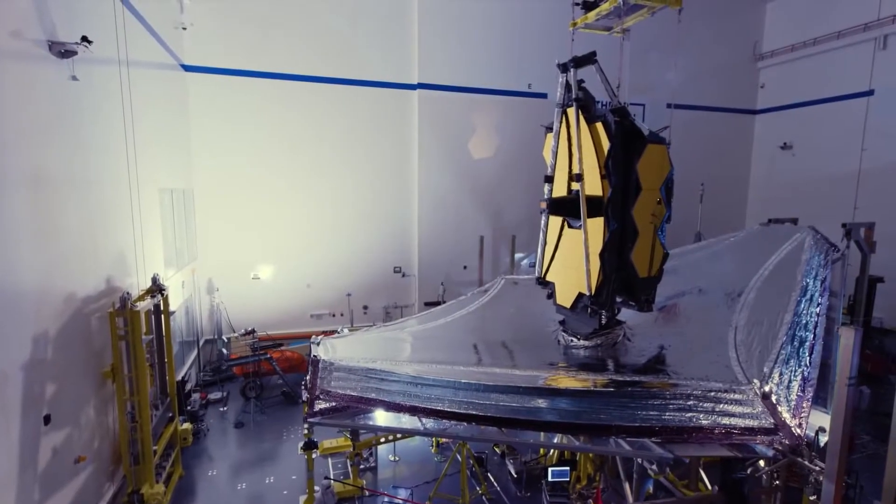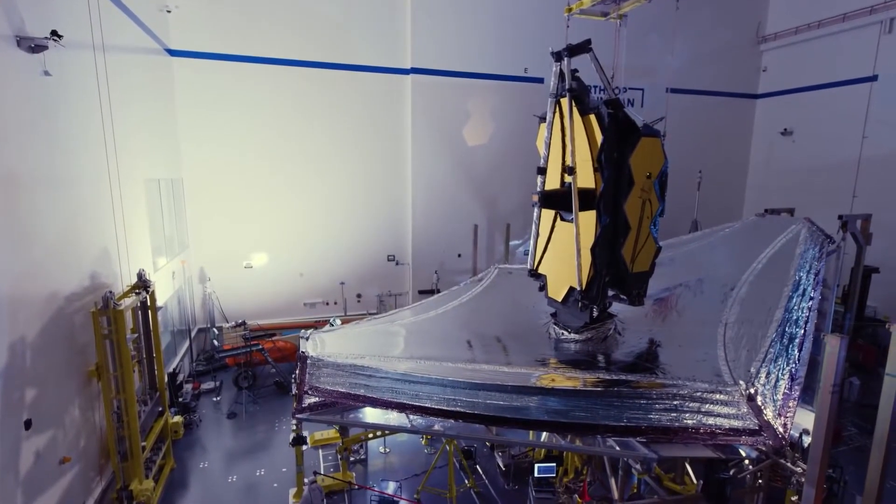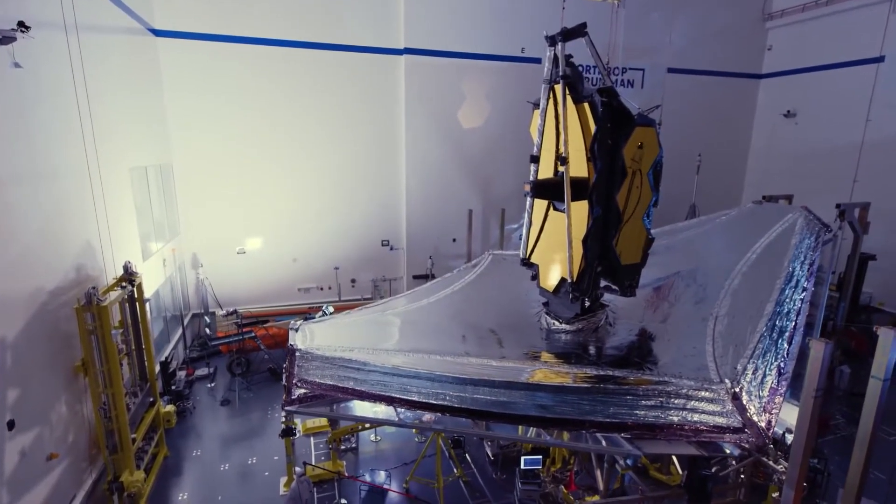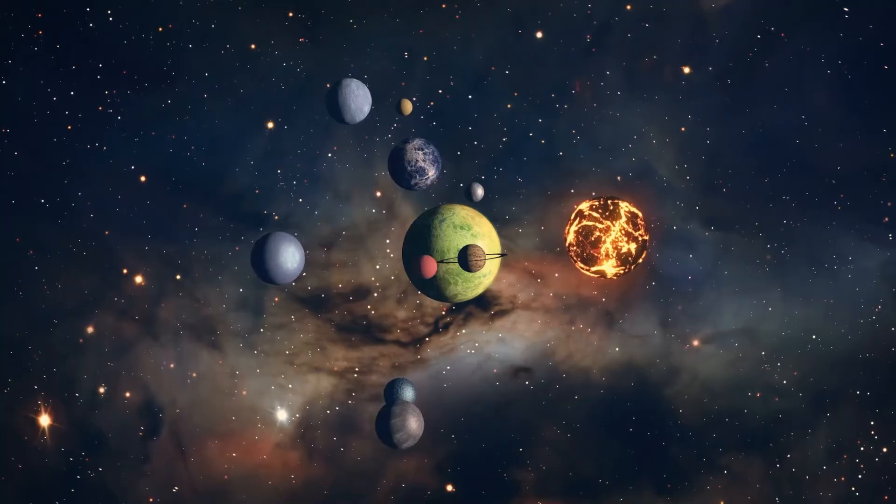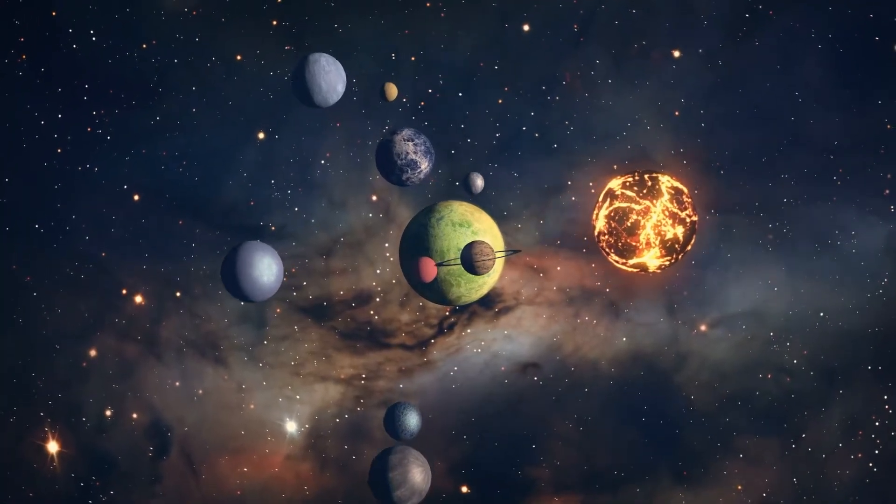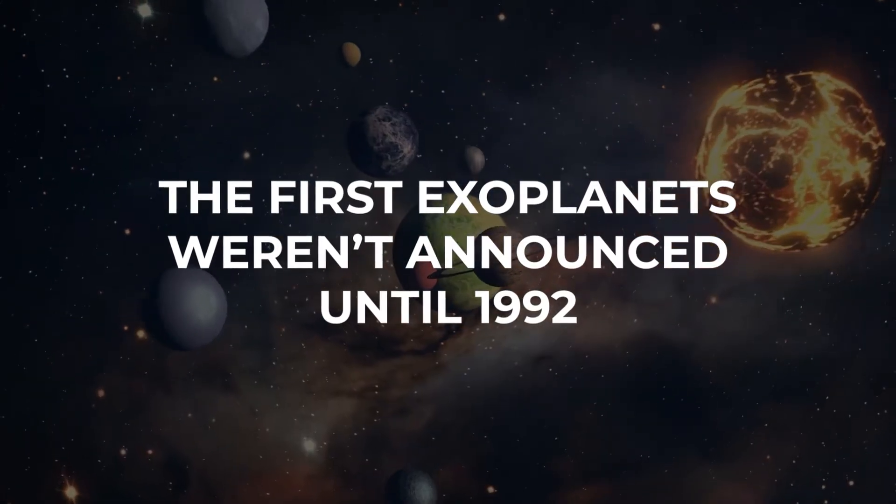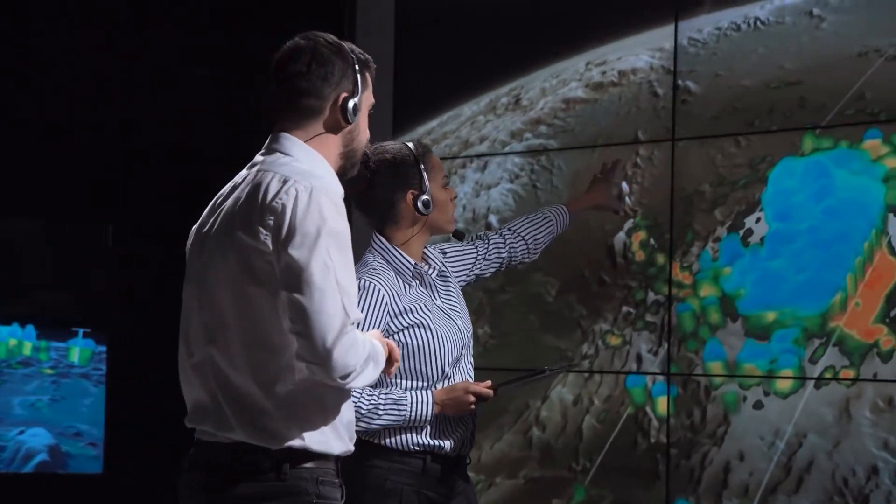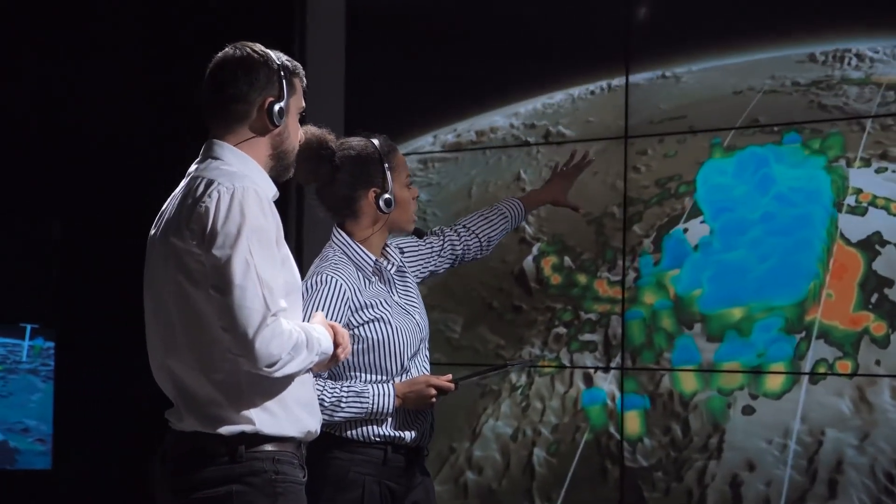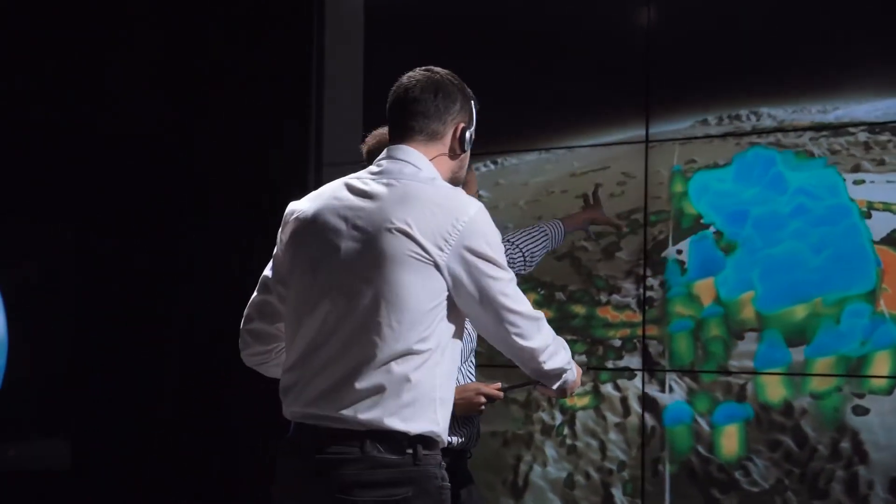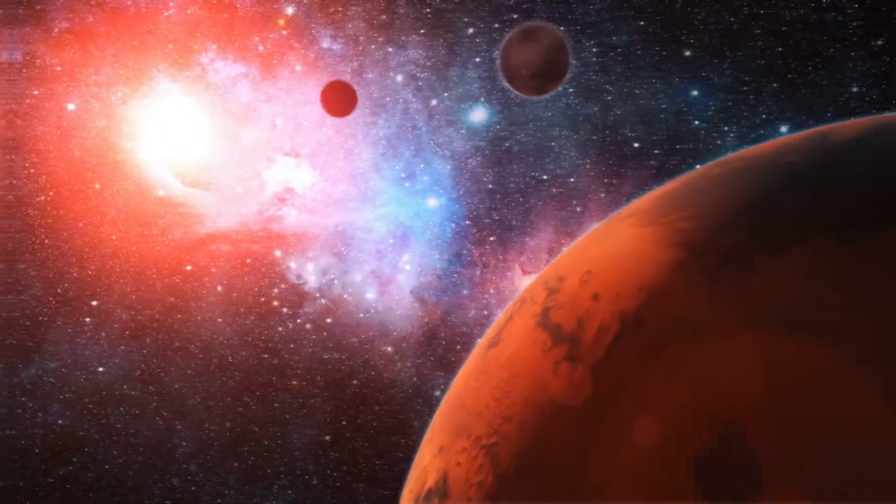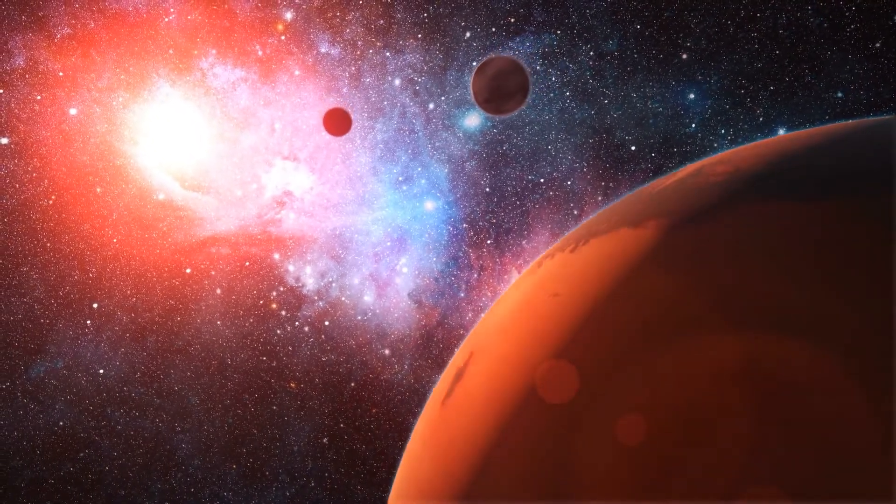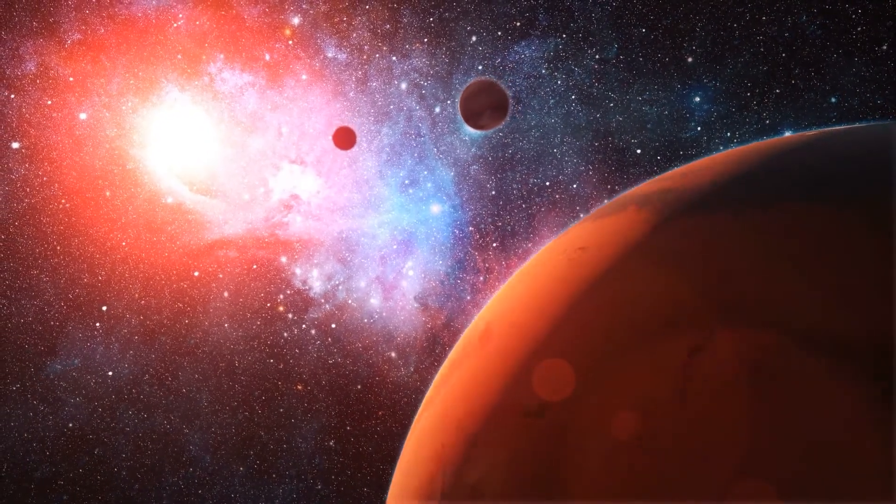When the James Webb Telescope was conceived in 1989, planets orbiting other stars had not yet been discovered. Planet formation theories suggested such worlds should exist, but the first exoplanets weren't announced until 1992. In the beginning, when the observatory was born, I don't think we even spoke about exoplanets. Exoplanets came later when we started discovering there were actually exoplanets.